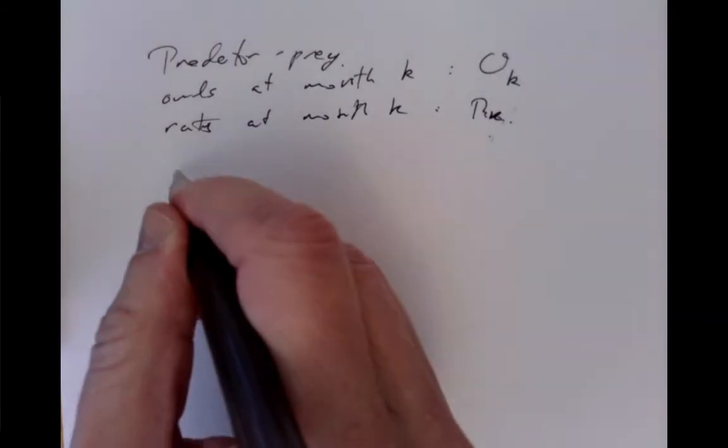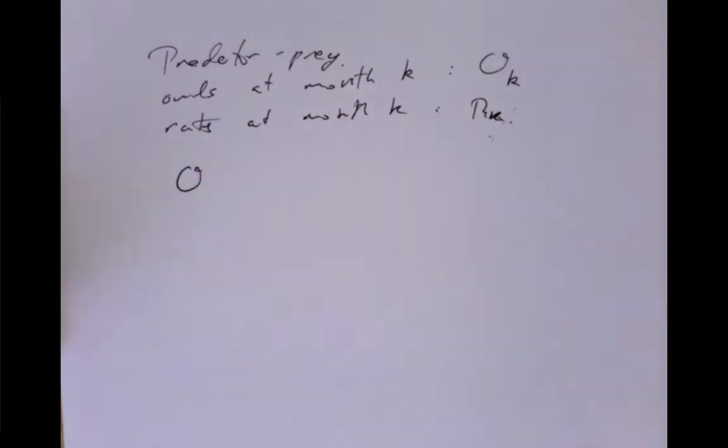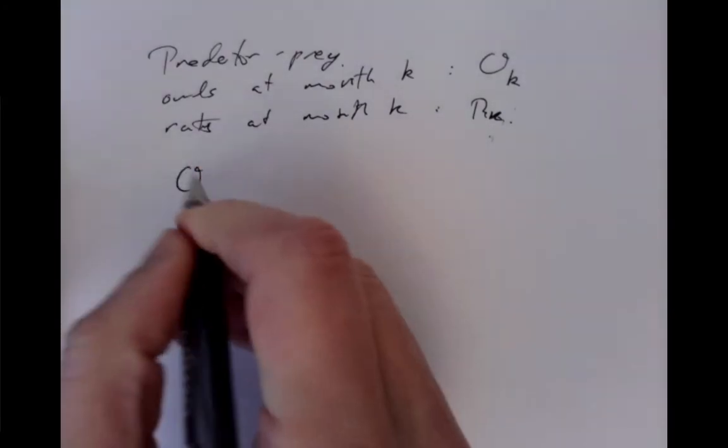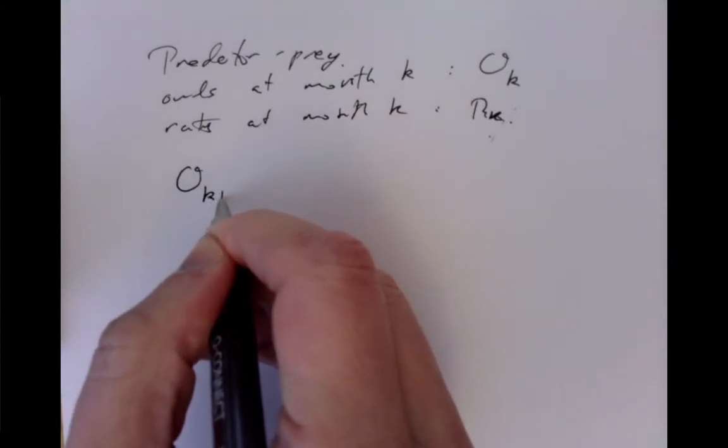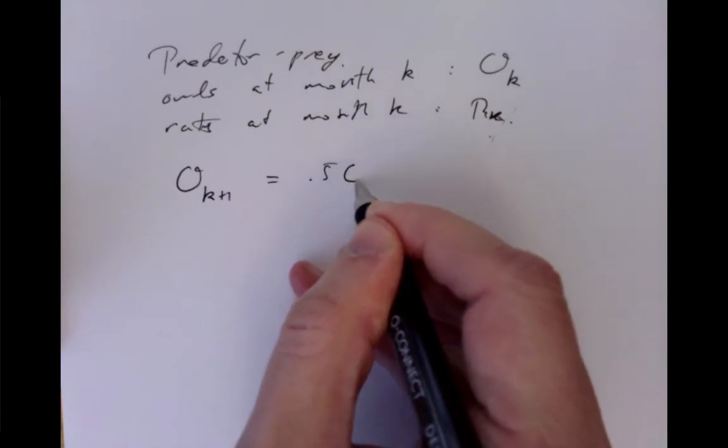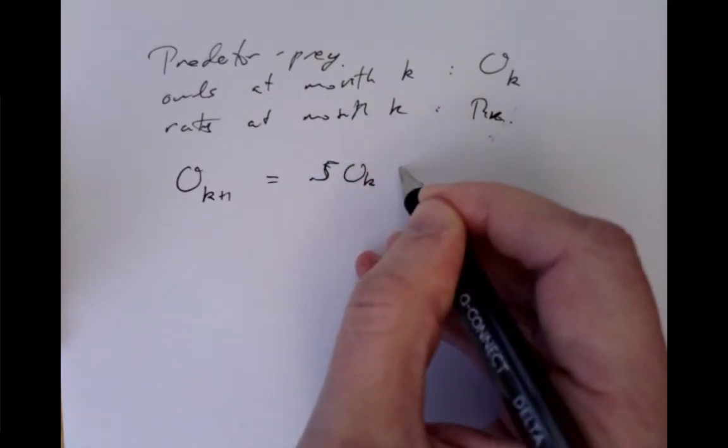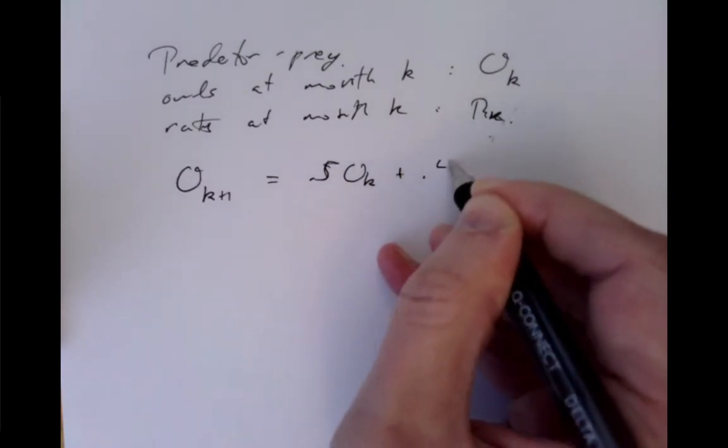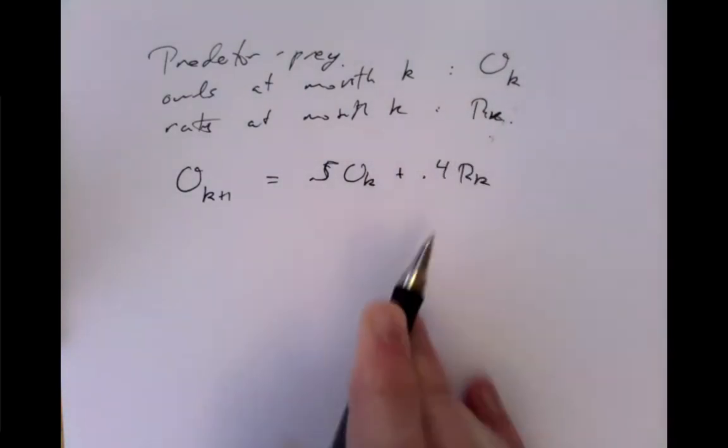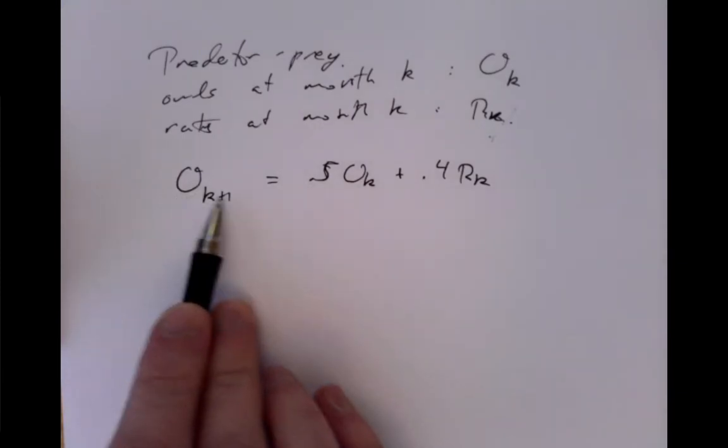So we look at a simple model of it. Imagine we've gone out and we've measured roughly how the populations vary from month to month. We've found that the next month's owl population is approximately 0.5 times the current one. That looks bad, it looks like they're all going to die off. But it's got 0.4 times the rat population. So this month we measure rats and owls, and we find that next month it's given approximately by this.